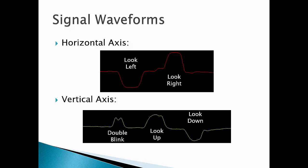The vertical axis is much more complicated, because on the vertical axis we also have a double blink which will correspond to a user clicking. This double blink signal is similar in magnitude and even a little bit shape to the signal that happens when the user looks up. When the user looks down, we achieve a negative pulse.